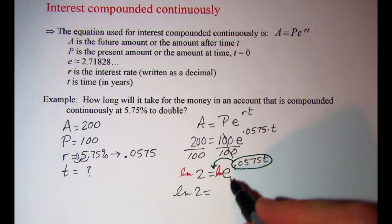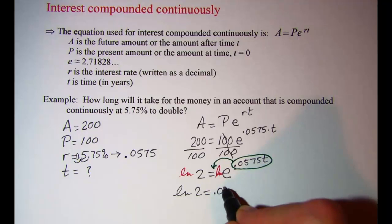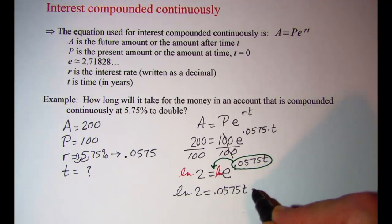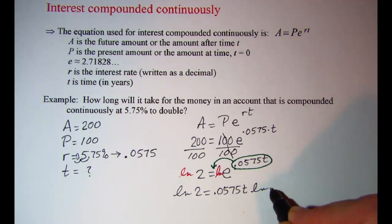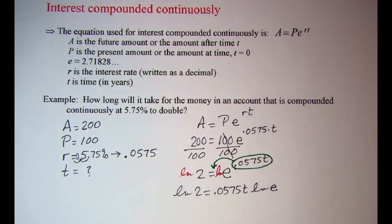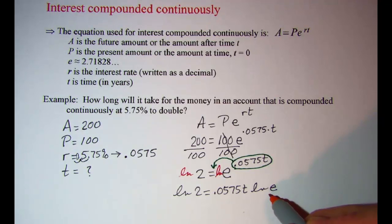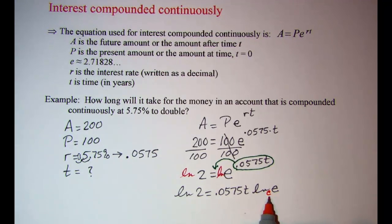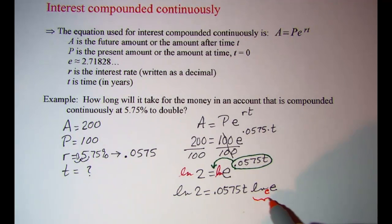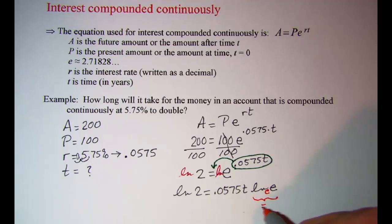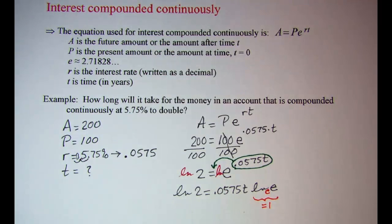So then this right side becomes 0.0575 T multiplied by the ln of E. And I'm also going to use the property of logarithms that says when the base of the logarithm, so the base of the natural log is E, when the base of the logarithm is the same as the argument, that factor is equal to 1. ln E is equal to 1.